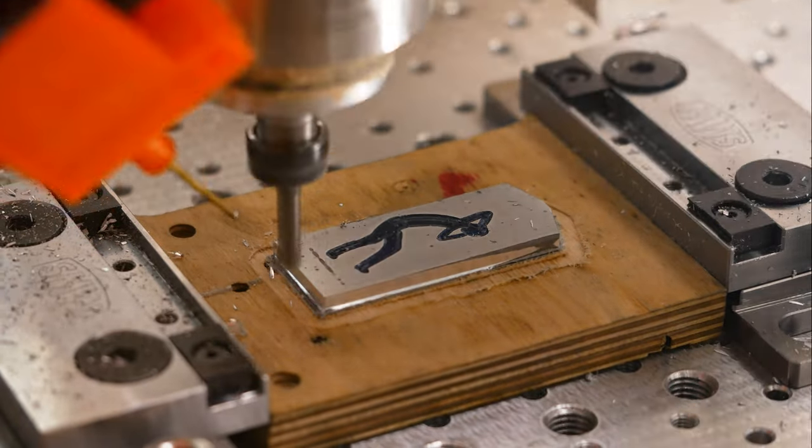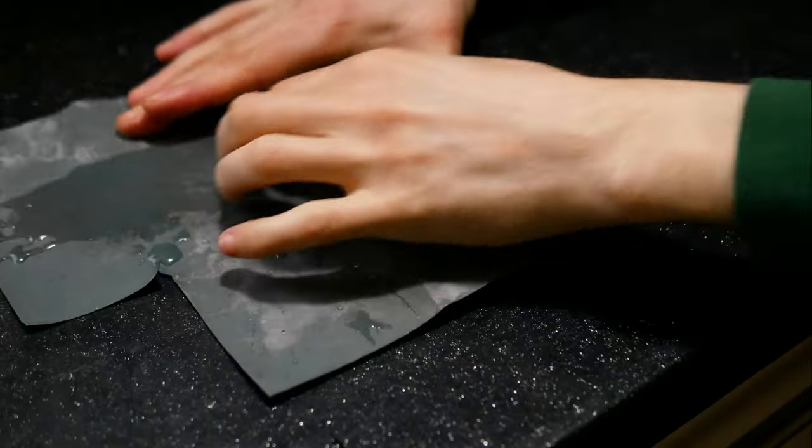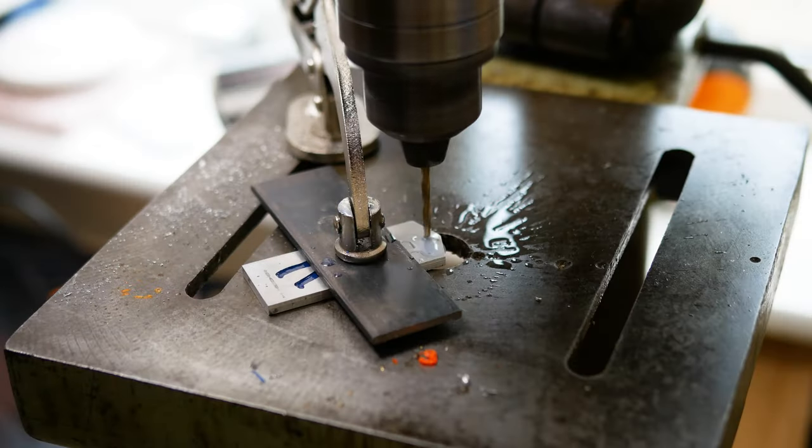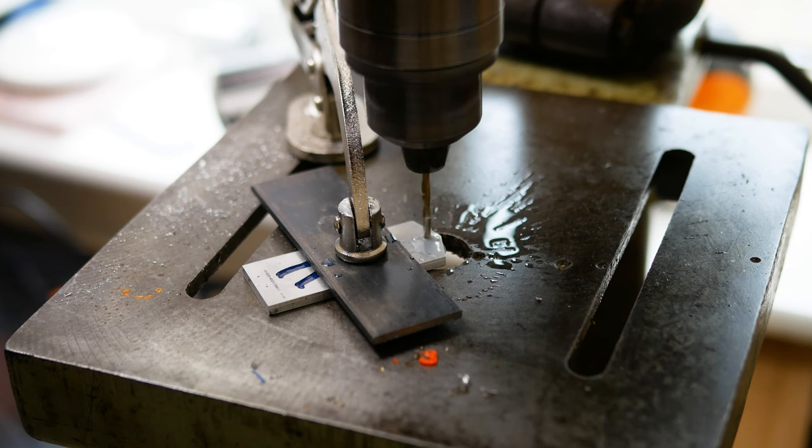Now I'm using my CNC to cut around the edges but this could be done with a hacksaw and some sanding. It's just going to take a little bit longer. Now I'm just making a small hole for the keychain ring and that's pretty much it. It's finished.